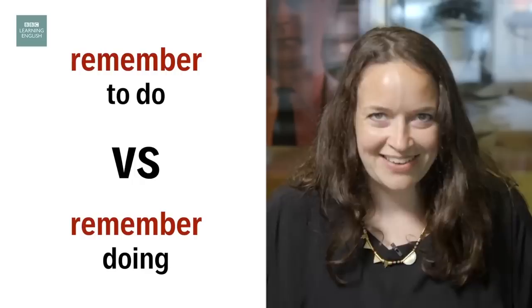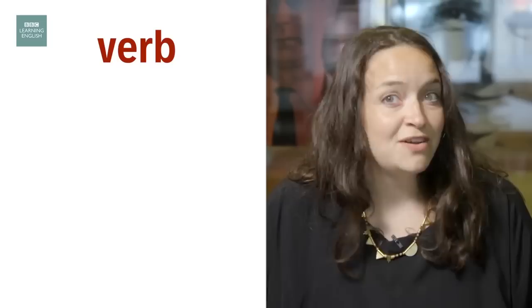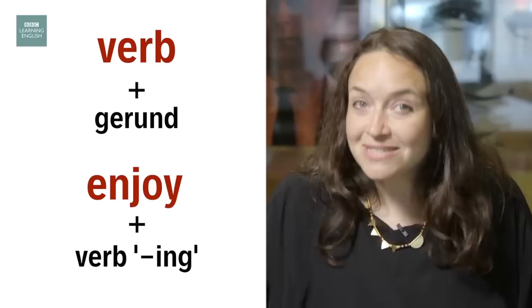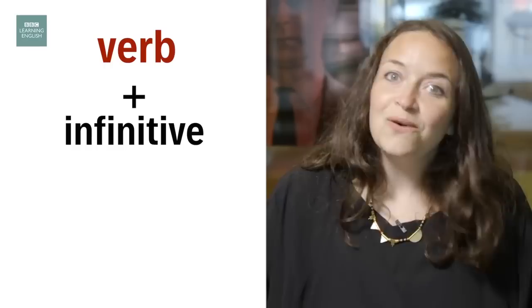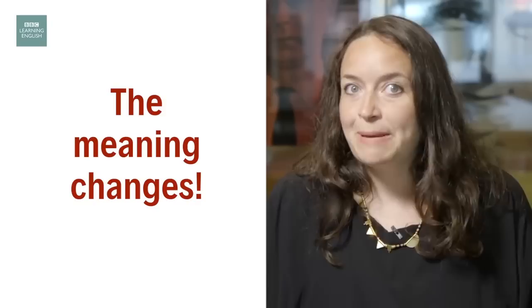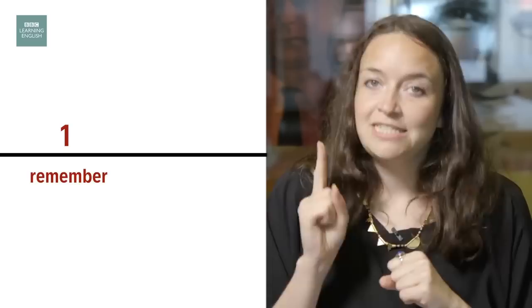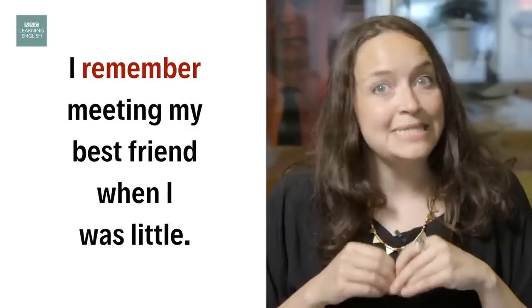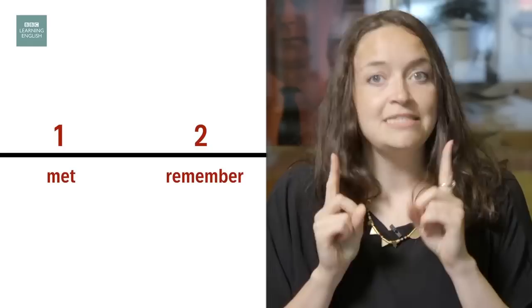Welcome everyone, Sam from BBC Learning English here. Some verbs are always followed by the infinitive, like 'want', and others always by the gerund, like 'enjoy'. But some verbs can be followed by either and the meaning changes. For example, 'remember': 'Remember to bring your umbrella' — first you remember, then you bring your umbrella. This is commonly used when talking about the future. 'I remember meeting my best friend when I was little' — first I met my best friend, then I remembered it. This is a memory, so it's commonly used when talking about the past.